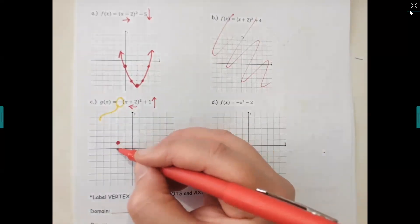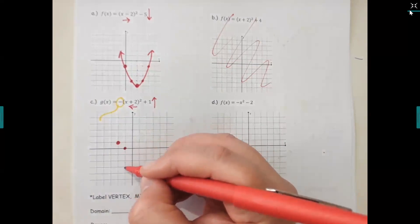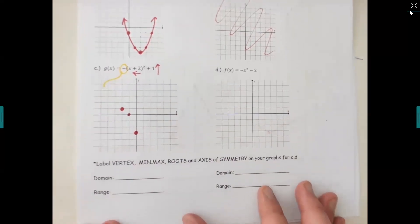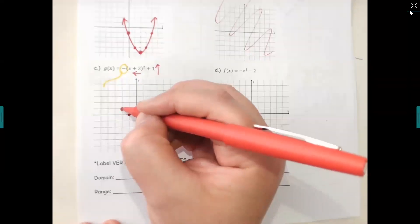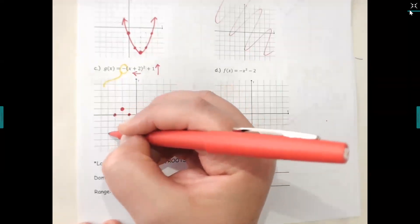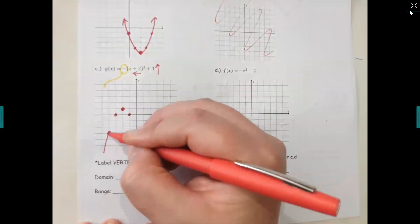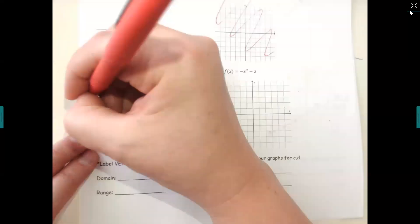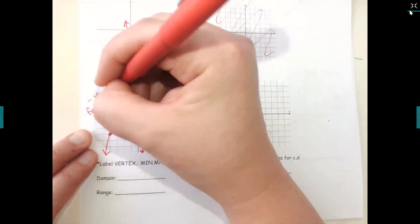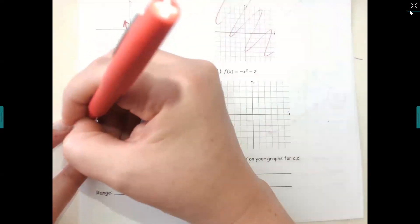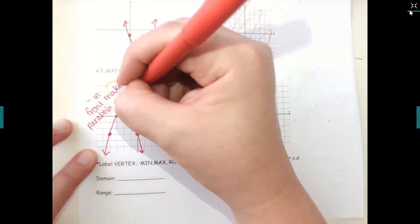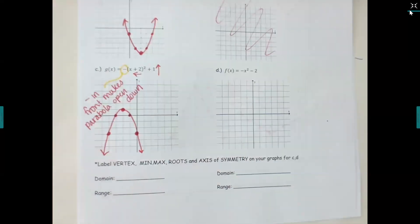To graph it opening down, go down over one, down three over one — the same measurements but in the opposite direction. Go back to your starter dot and go down over one, down three over one the other way. The negative in front makes the parabola open down.